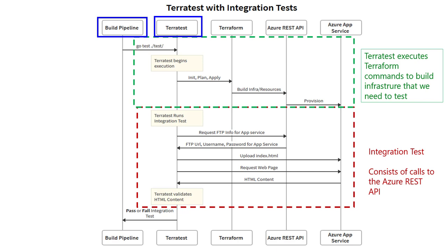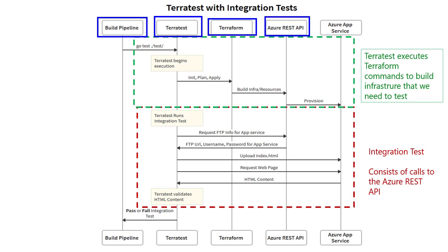We want to provision resources with Terraform. Terraform and TerraTest, in our case, are going to interact with the Azure REST API — which isn't typical, but we're going to add that. And then finally, we're going to create an Azure App Service.